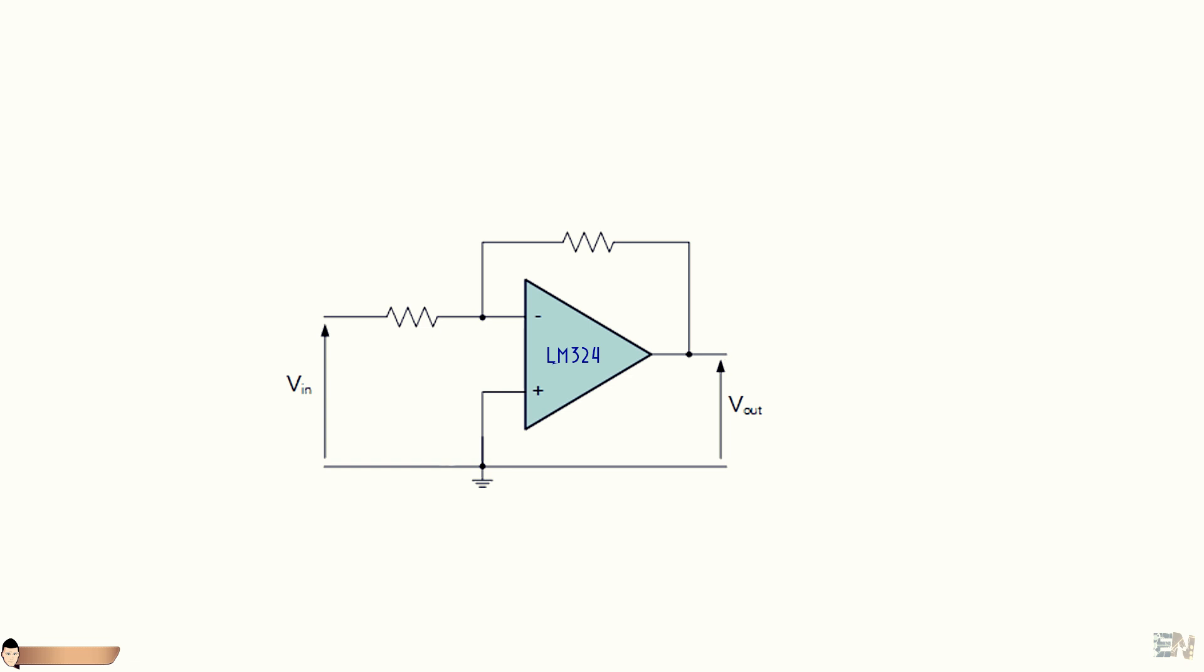In the inverted configuration, the gain is given by these two resistors. In my case, one of 100 kOhms and the other one of 1 kOhm, equal to a gain of 100.